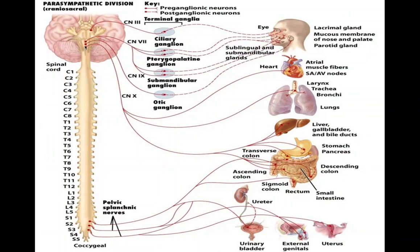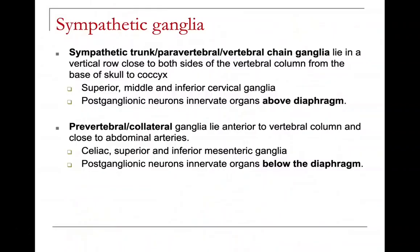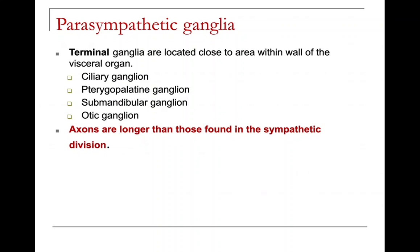The parasympathetic fibers come from the cranial and sacral regions. The sympathetic trunk — a pair of vertebral chain ganglia — lies in a vertical row close to both sides of the vertebral column from the skull base to the coccyx. Superior, middle, and inferior cervical ganglia have postganglionic neurons innervating organs above the diaphragm. Prevertebral or collateral ganglia lie near the anterior vertebral column near abdominal arteries, including the celiac and superior and inferior mesenteric ganglia, innervating structures below the diaphragm. Parasympathetic terminal ganglia are close to or within the wall of the visceral organ, including ciliary, pteropalatine, submandibular, and otic ganglia; their axons are longer than in the sympathetic division.